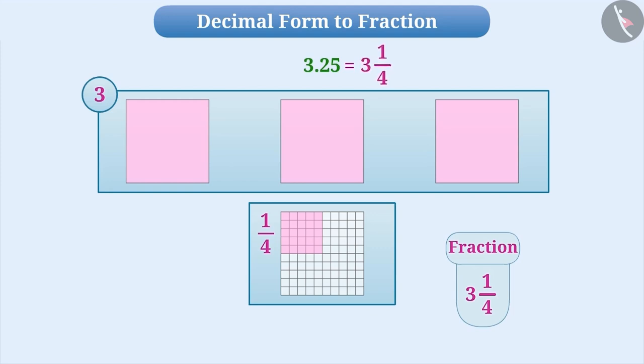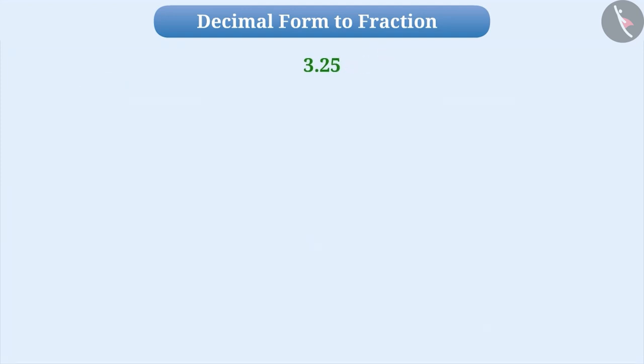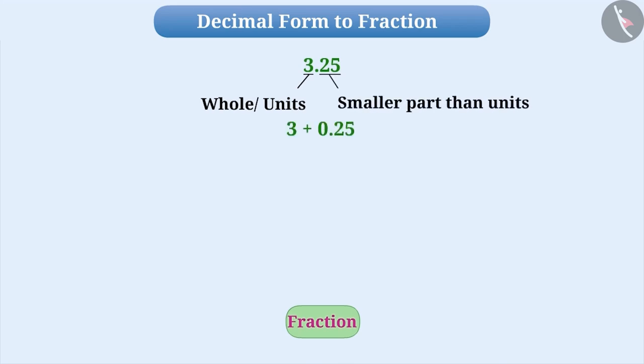In mathematics, to represent any decimal number in fractional form, we will separate the whole part and the part smaller than units. Then, we will represent the part smaller than units in fractional form. And, we will find the simplest form of this fraction.